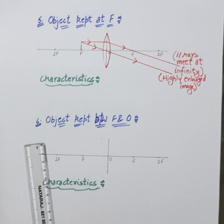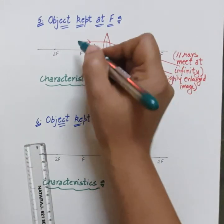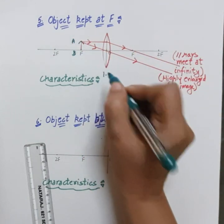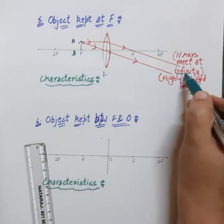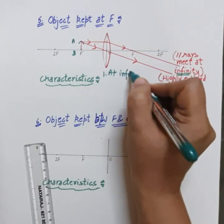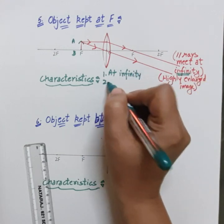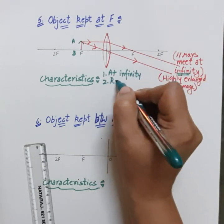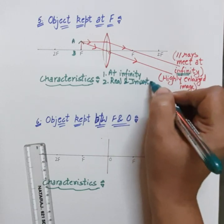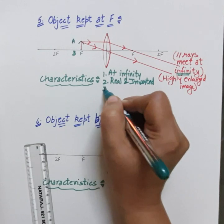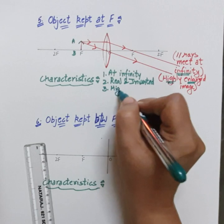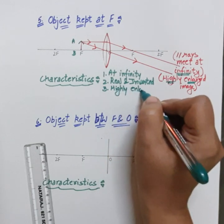Draw the shape of the lens and label the object AB. The first characteristic is position: the image is formed at infinity. Since parallel rays meet at infinity, they form a real and inverted image. The size is highly enlarged — a highly enlarged image is formed at infinity.